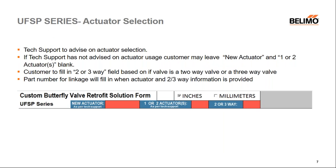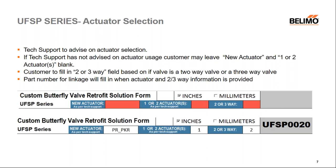The next part is actuator selection. Belimo tech support will advise on the actuator selection. If you do not have that advisement, the customer may leave the new actuator and one or two actuators fields blank, but will still need to fill in two-way or three-way based on their valve. As the new actuator, one or two actuators, and two-way or three-way fields are filled in, the linkage part number will populate automatically.